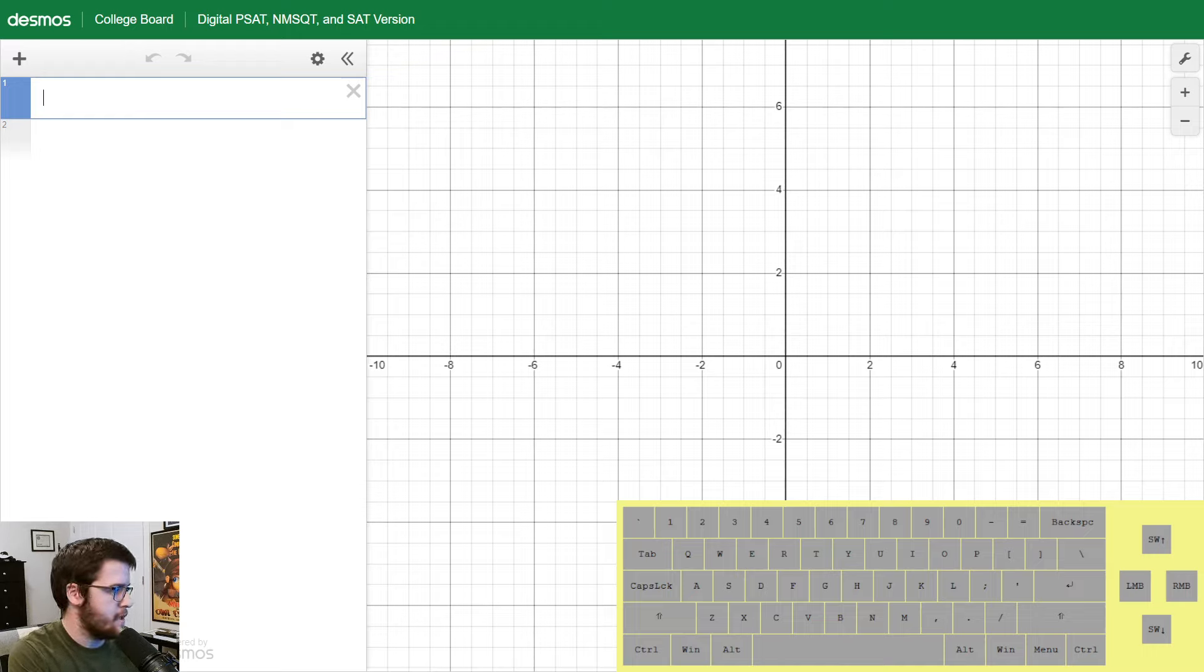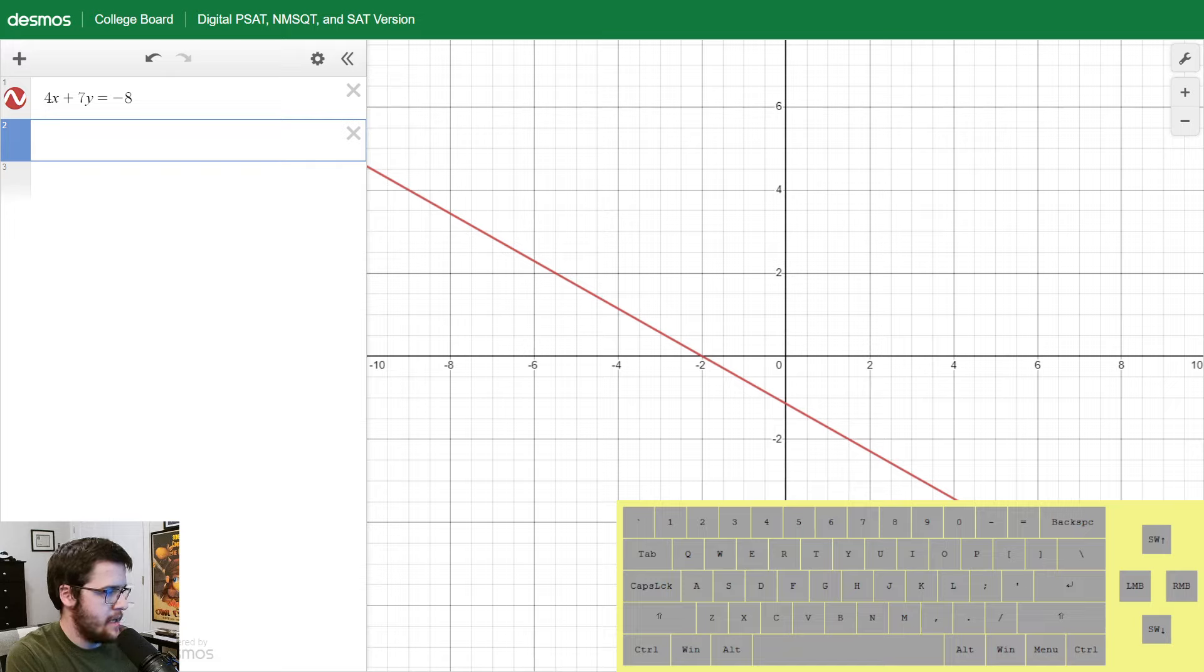All right, so the first equation is 4x plus 7y equals negative 8, and the second equation is negative 8x minus 14y equals 16. The first thing I'm noticing right away is that these two lines are right on top of each other. They're coincident lines, so that means they have infinitely many solutions. I'm not even thinking of this as a system anymore, I'm just thinking about it as a line.